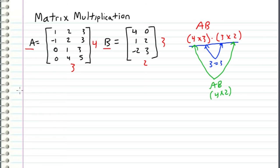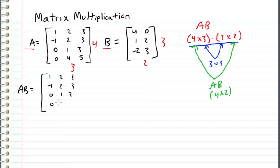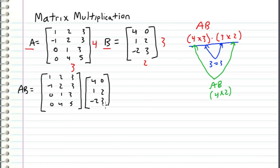So now let's multiply these two together and write this out properly. We have A times B, where A is the matrix with entries 1, 2, 3, negative 1, 2, 3, 0, 1, 3, and 0, 4, 5. This is left multiplying matrix B, which has entries 4, 0, 1, 2, negative 2, and 3. As determined, the product will be a four by two matrix — four rows and two columns.